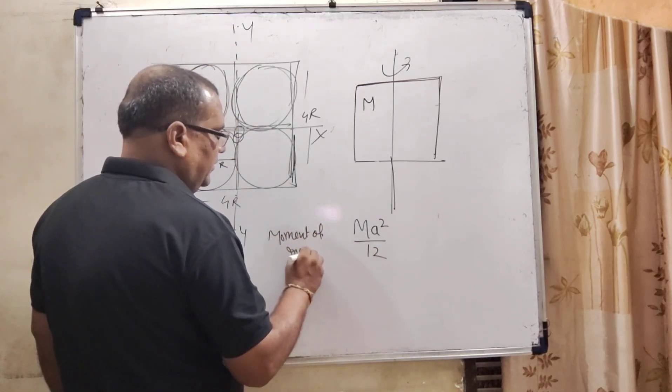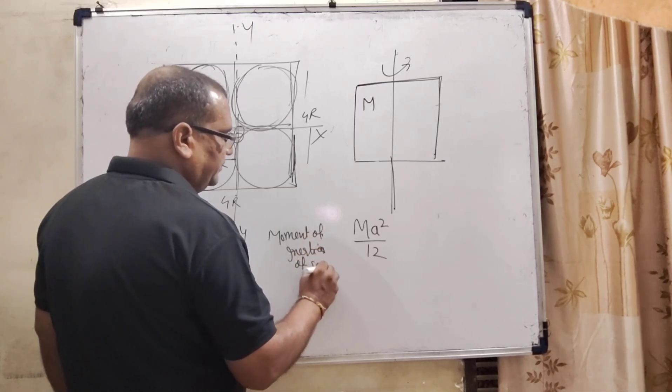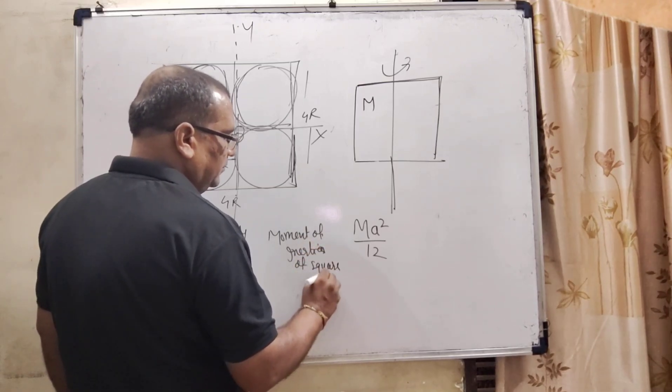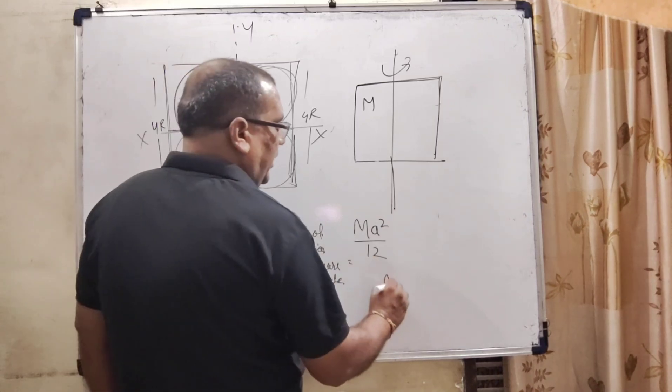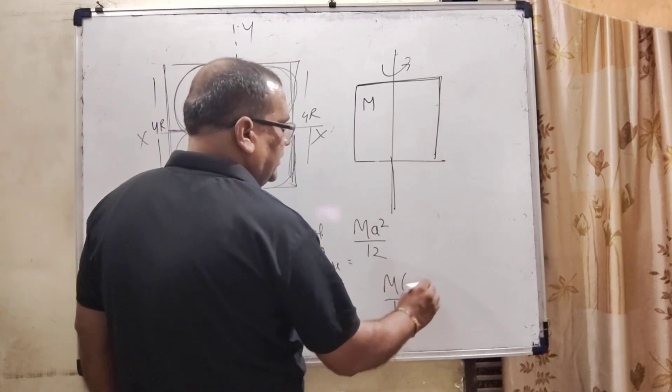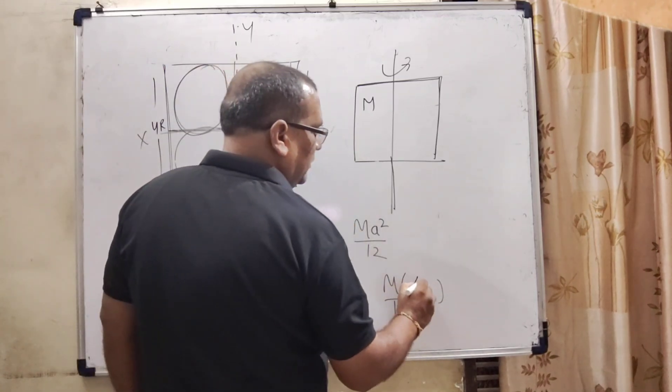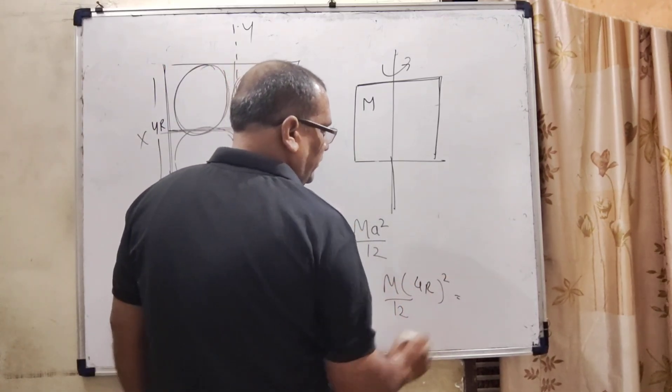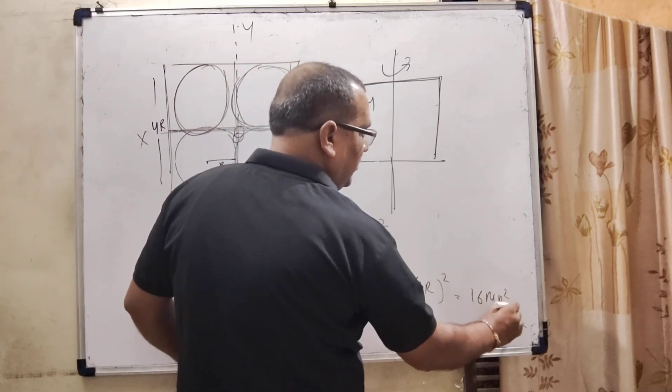Moment of inertia of square plate: M by 12, and A is 4R, so 4R whole square. We get 16 MR square by 12. 4 into 4 is 16, 4 into 3 is 12, means 4 by 3 MR square.